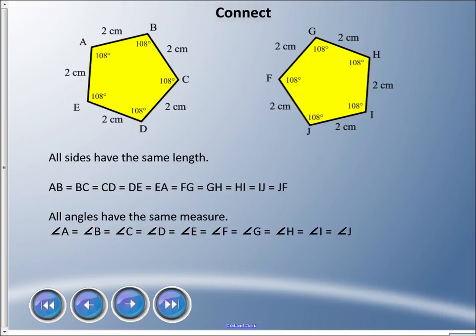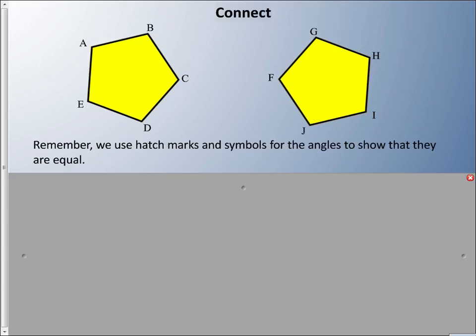Now here's our same shapes here just to show that the line segments AB equals BC equals CD equals DE equals EA, and then moving on to the other pentagon. And again, all the angles are the same, so I can say angle A equals angle B equals angle C, etc.